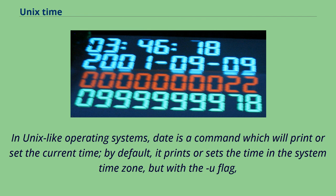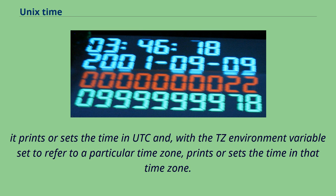In Unix-like operating systems, date is a command which will print or set the current time. By default, it prints or sets the time in the system time zone, but with the -u flag it prints or sets the time in UTC. With the TZ environment variable set to refer to a particular time zone, it prints or sets the time in that time zone.